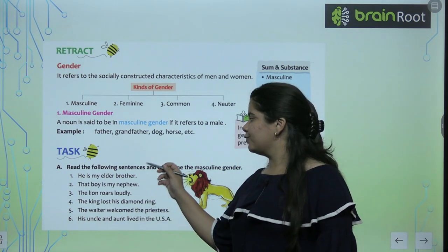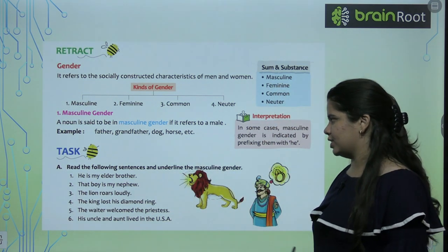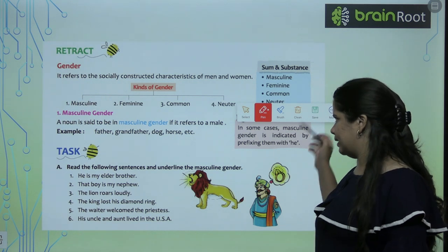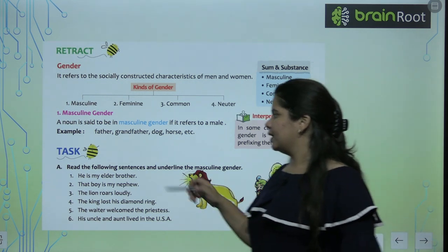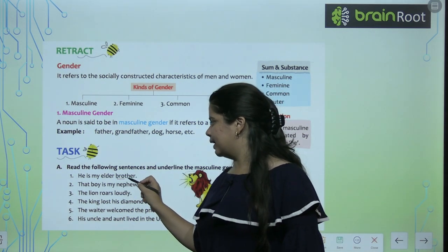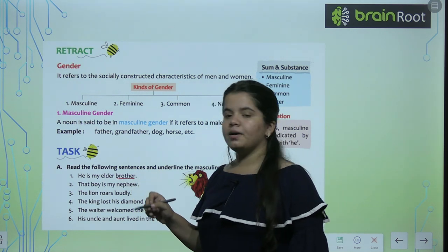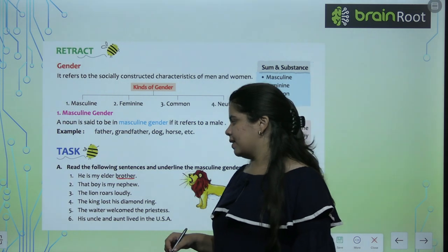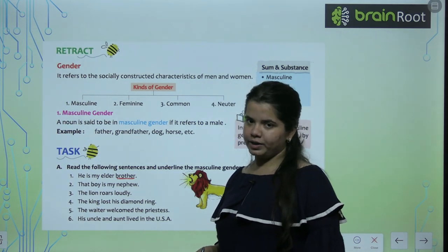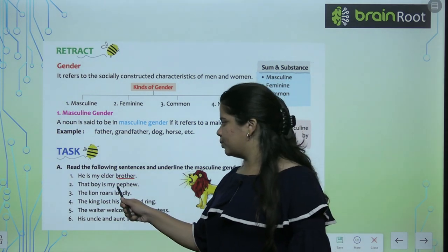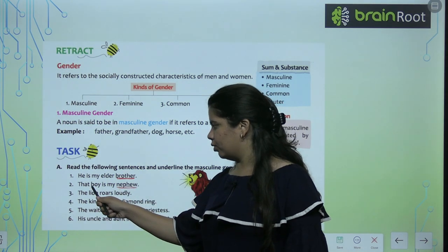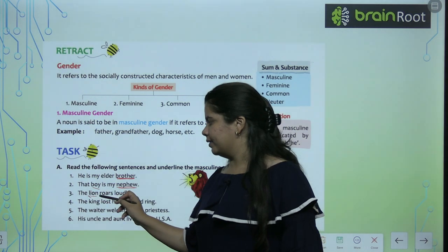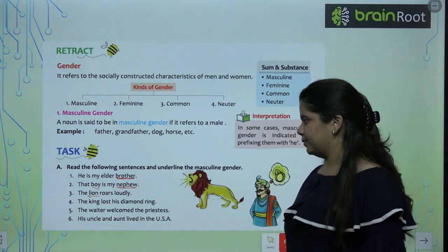Now we have a task: read the following sentences and underline the masculine gender. Aapko masculine gender ko underline karna hai. Let's do it — this is very easy. He is my elder brother — kyunki brother ek masculine gender hai. That boy is my nephew — nephew is a masculine gender and boy also. The lion roars loudly — lion is masculine gender.